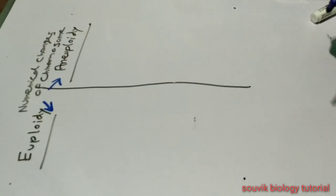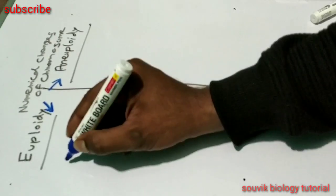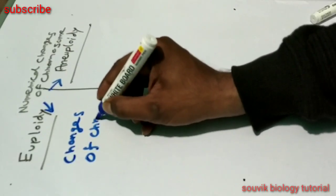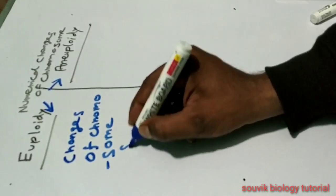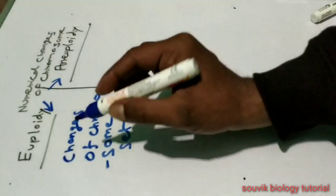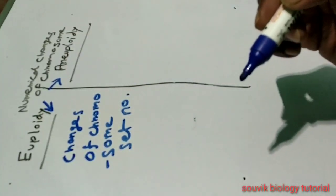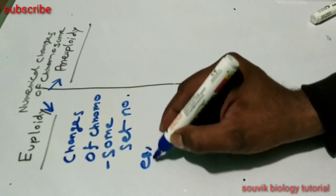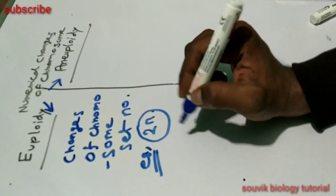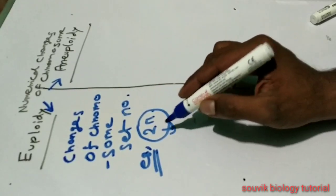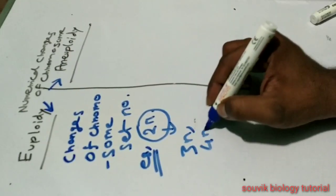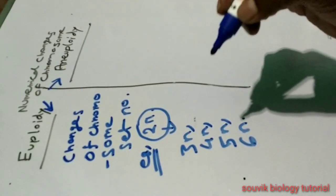In simple words, euploidy means changes of chromosome set number. As for example, we all know we are diploid, that is denoted by 2n. When this set number is changed — if the chromosome set number is greater than 2n, that means 3n, 4n, 5n, 6n — this is known as polyploidy.